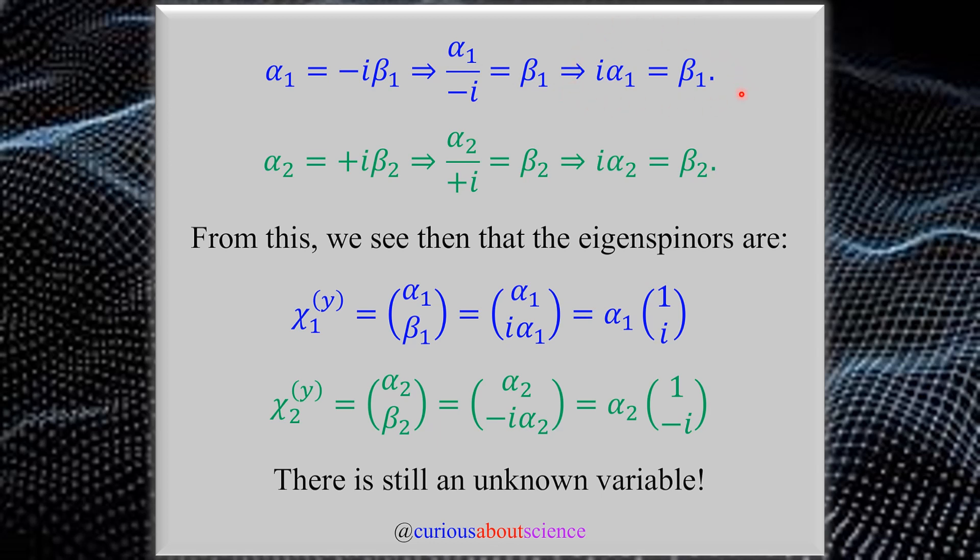Once we do that, we see here that this happens in both cases. We can plug this back into our form of the vector where beta 1 takes on this, beta 2 takes on this, and we could factor out alpha 1 and alpha 2 respectively. We see that these are the heart of the eigenvectors. In this context, they're eigenspinners. What we call alpha is a free variable until we realize we're dealing in quantum mechanics and we could use our old reliable friend.